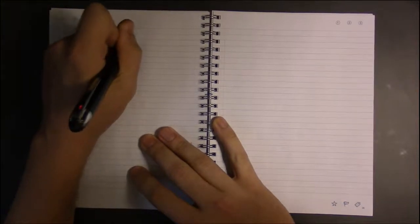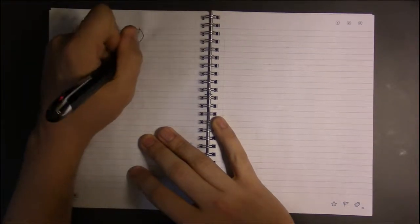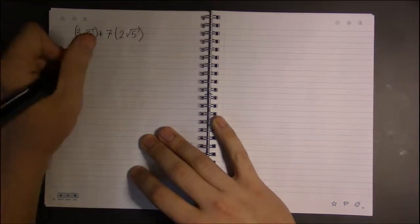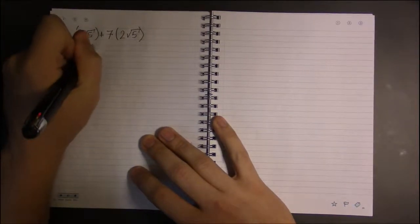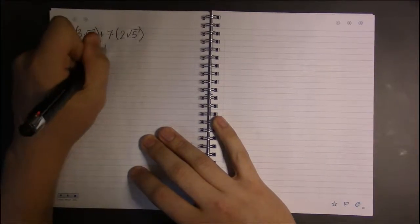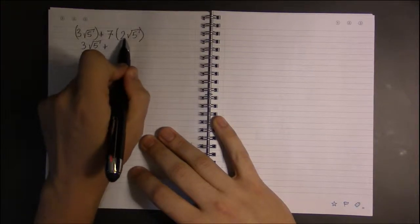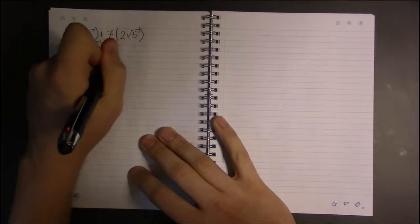what was 7 times 2 square roots of 5. Let's simplify this. 3 square root of 5, I can do 7 times 2, that leaves me with 14.